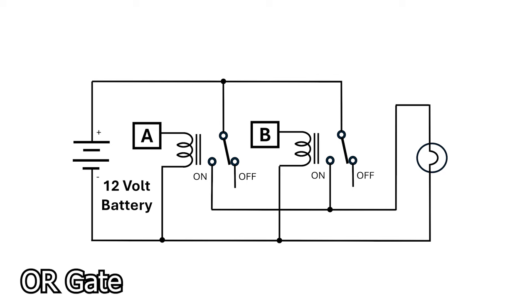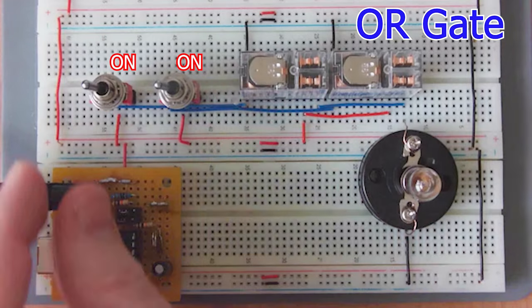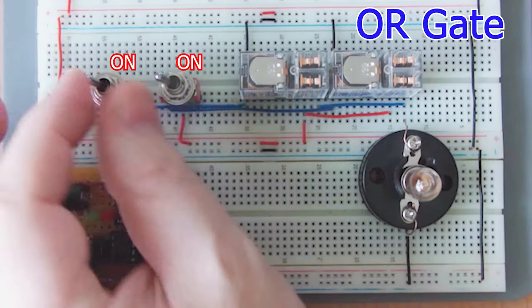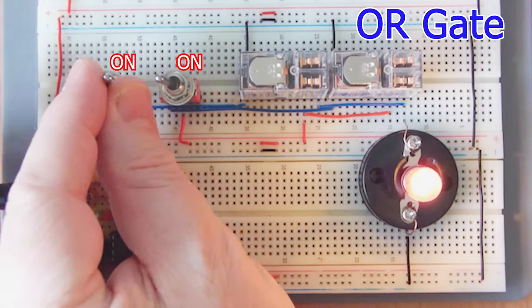Now in this configuration, if both A and B are off, there's no electricity to the globe. But if A is on, or if B is on, or both are on, then we have a closed circuit with the globe, and it turns on. This is an OR gate. I've reconfigured the wires to be an OR gate, and now we only need one relay to be on for the light to be on.